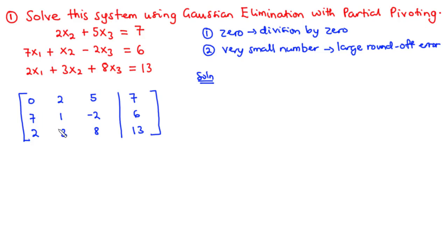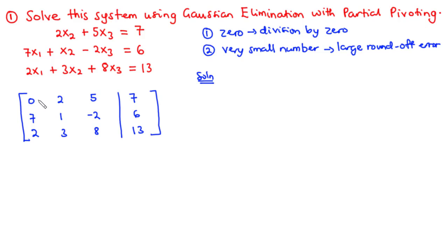For the first step of forward elimination, we consider row one as the pivot row and the first element — which is zero — as the pivot element. Since the pivot element is zero, we would encounter division by zero. That is where partial pivoting comes into play. What we are going to do for partial pivoting is to consider the first column of the augmented matrix.